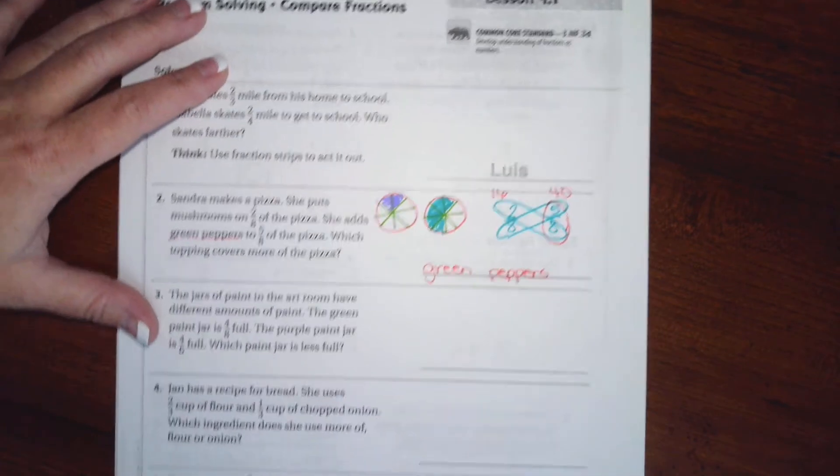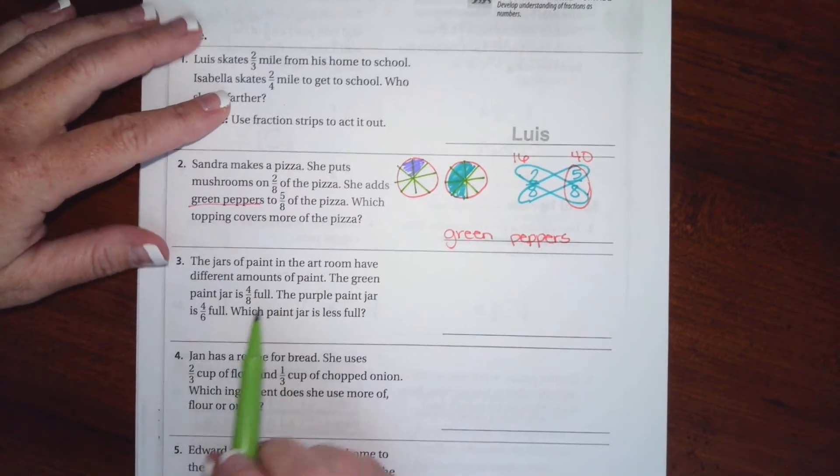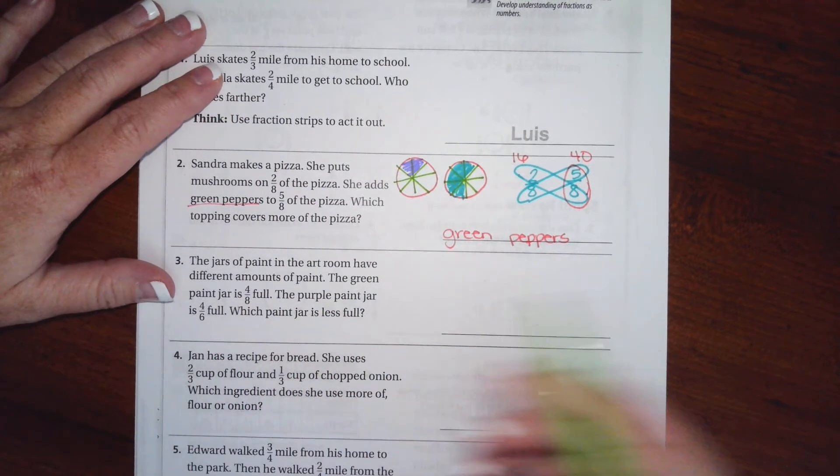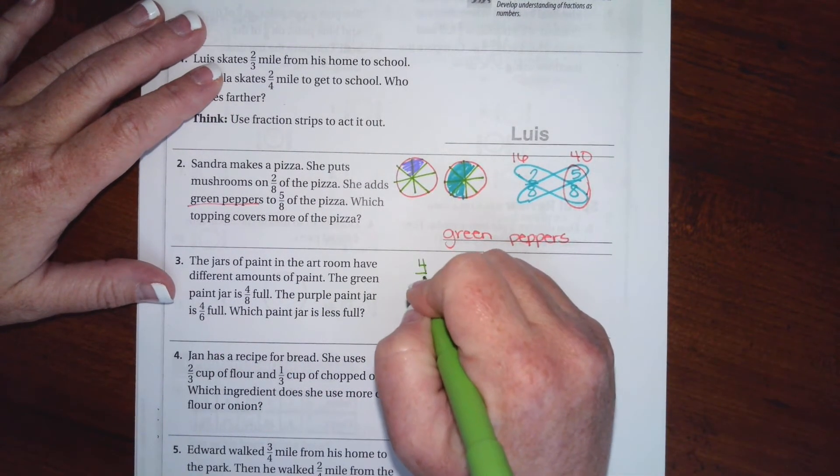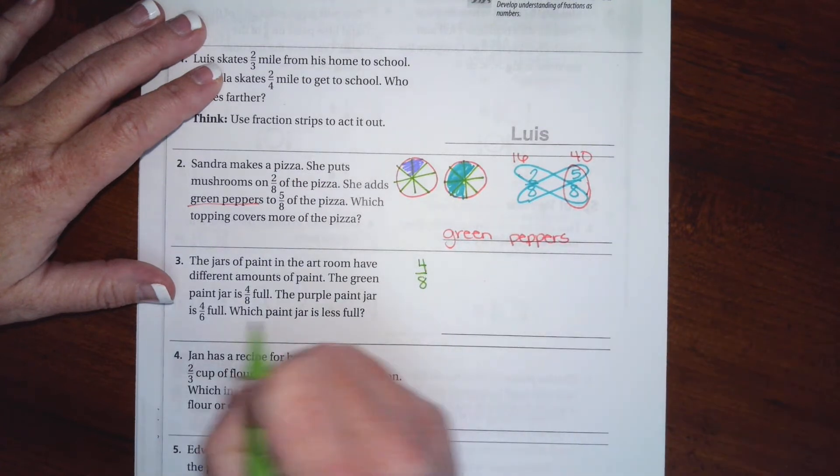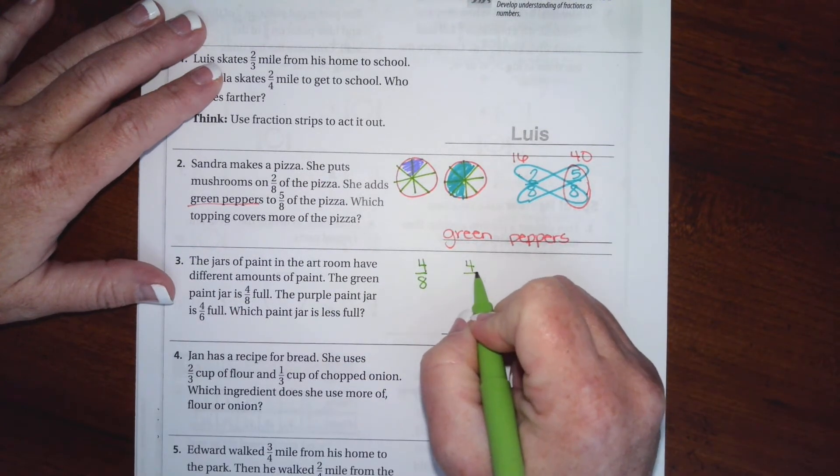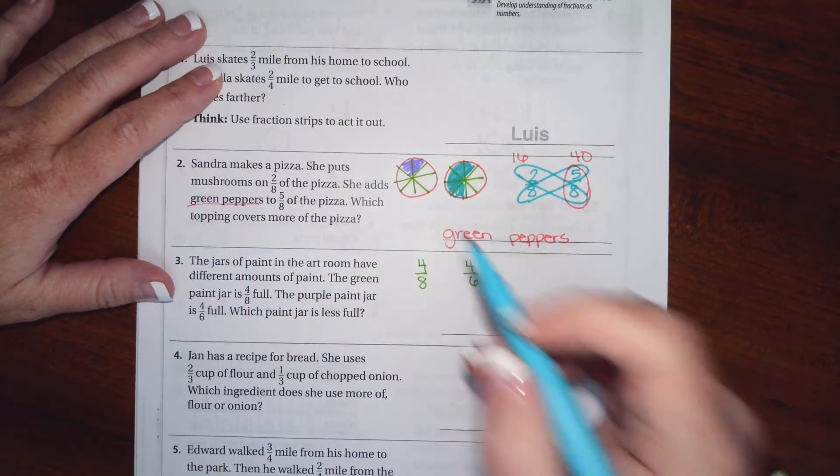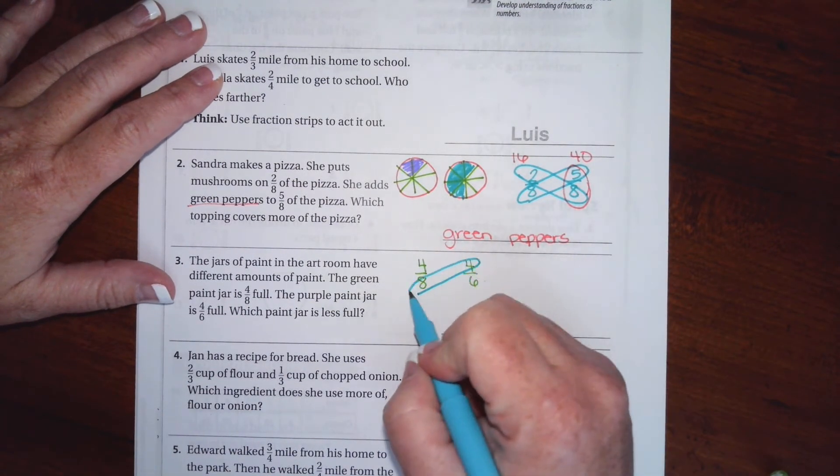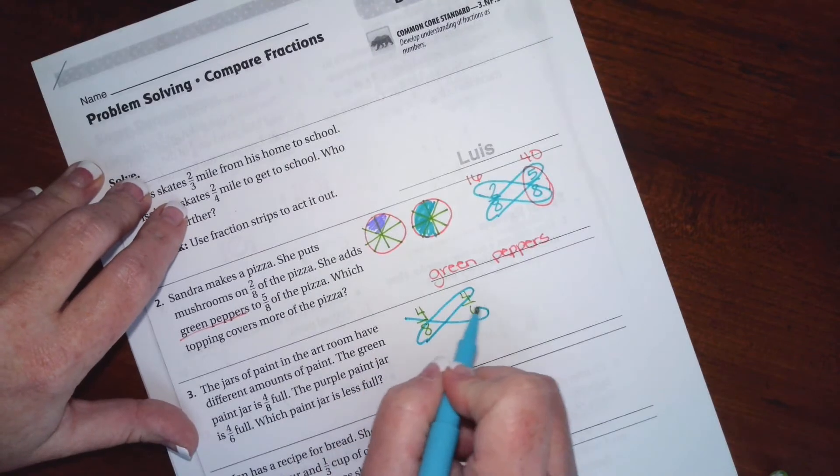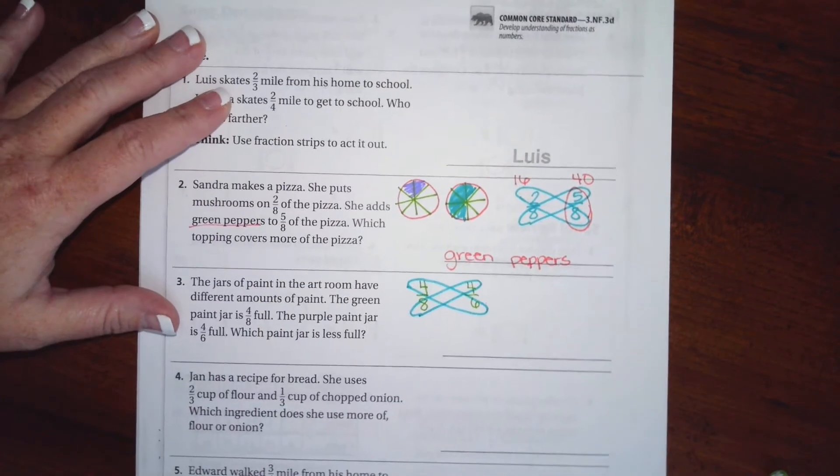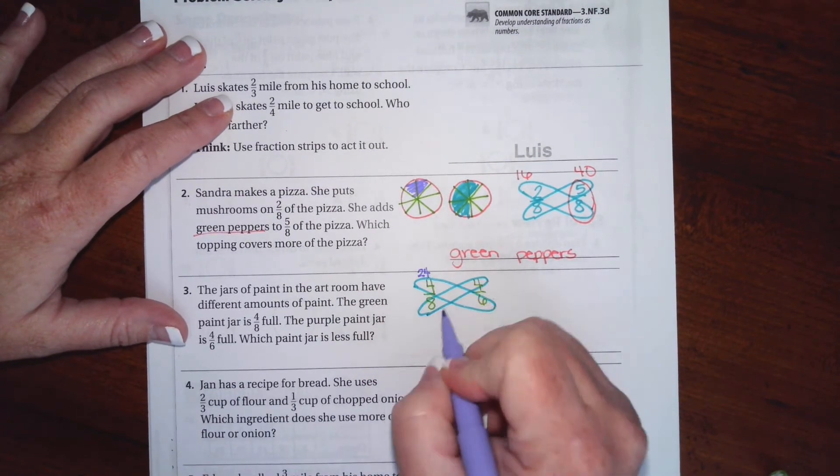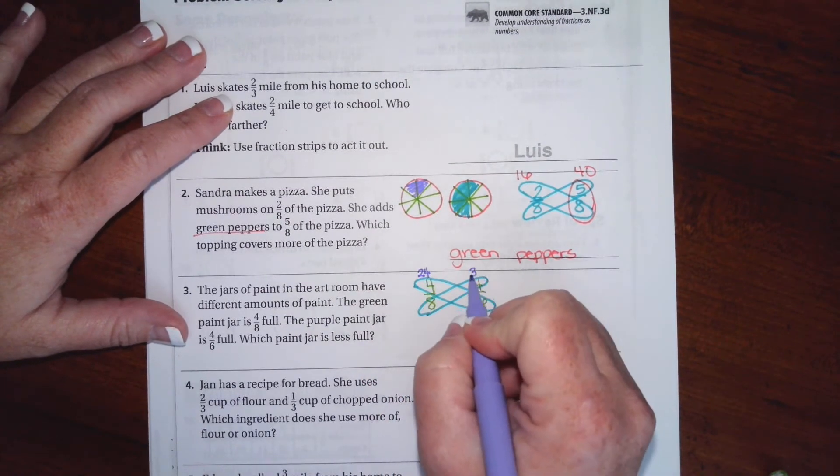Okay, so let's go ahead and do the next one. The jars of paint in the art room have different amounts of paint. The green paint jar is 4/8 full. The purple paint jar is 4/6. Now we have the same numerator, but not the same denominator. So I'm going to go ahead and do my butterflies. So I know that 4 times 6 is 24.